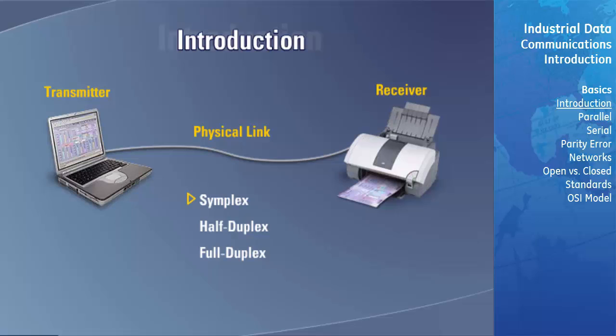Within a simplex link, data can only flow in one direction with no possibility for a change in direction. A half-duplex link has the capacity to transmit data in either direction; however, data can only flow in one direction at any time. With a full-duplex link, data can flow in either or both directions at the same time.